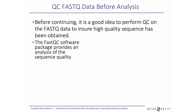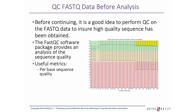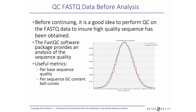Before continuing with further analysis, evaluating sequence quality is important to ensure high quality data has been obtained. The FASTQC software provides a quick evaluation of a number of metrics. Note that with ChIP-seq data, it is common for not all metrics to have passing quality, but the following are important to review. Per-base sequence quality shows the values of the FASTQ quality string across the entire sample — high quality across the entire sequence is important for subsequent steps. Per-sequence GC content is shown as two curves representing the actual and theoretical values; these two curves should roughly match, and a large difference can indicate problems with the data.